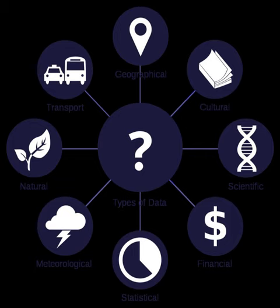Beynon-Davies uses the concept of a sign to differentiate between data and information: data is a series of symbols, while information occurs when the symbols are used to refer to something. Before the development of computing devices and machines, people had to manually collect data and impose patterns on it. Since the development of computing devices, these devices can also collect data. In the 2010s, computers are widely used to collect and sort data across fields ranging from marketing and social services analysis to scientific research. These patterns in data are seen as information which can be used to enhance knowledge.